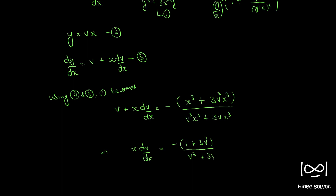Simplifying, we get x·dv/dx = −(1 + 3v²)/(v³ + 3v) − v, which simplifies further to −(1 + 3v² + v⁴ + 3v²)/(v³ + 3v).